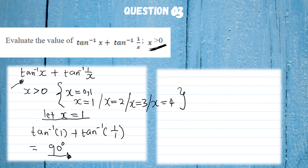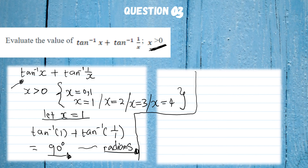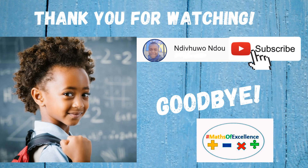We can also express this answer in radians. To convert degrees to radians, multiply by π/180: 90° × π/180 = π/2. So the final answer is π/2 radians. This marks the end of our lesson — thank you very much for watching. If you liked what you learned today, hit the subscribe button, like the video, and drop a comment with any suggestions.